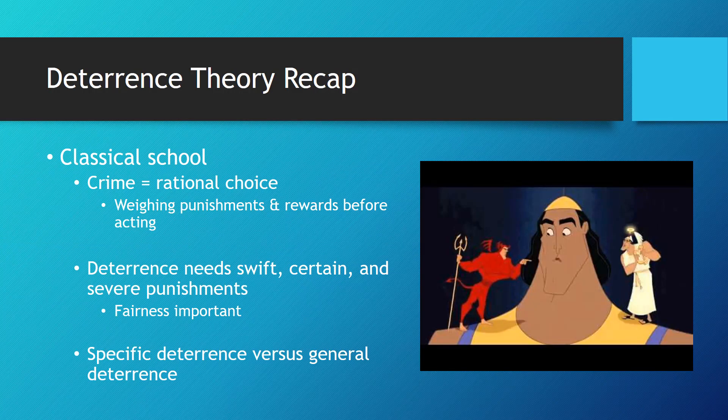In this lecture we will discuss modern theories that utilize the deterrence and classical perspective. I want to take a minute to review the original deterrence theory, the classical school of criminology. Classical theorists argued that crime was the result of a rational choice, where an offender would weigh the expected punishments against the expected rewards, and then engage in a behavior based on the balance between the two.